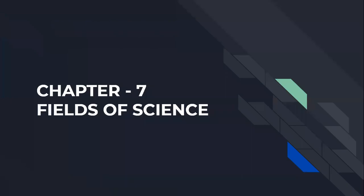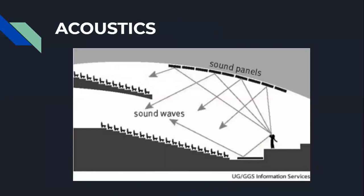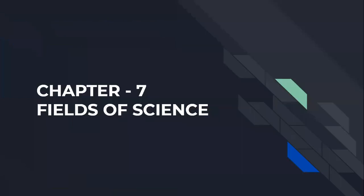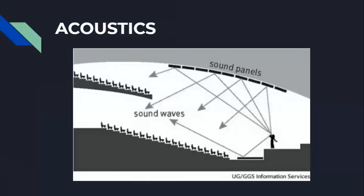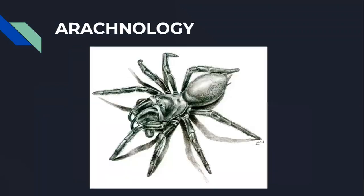Next we have fields of science. There are many fields in science and the study of some particular fields have specific names. To start with, we have acoustics — acoustics is the study of sound. Next, arachnology — the study of spiders.